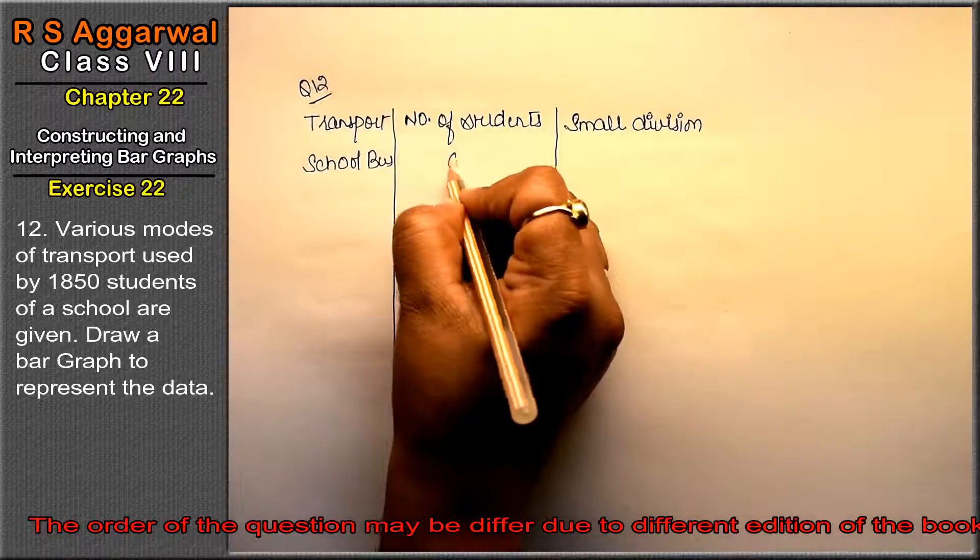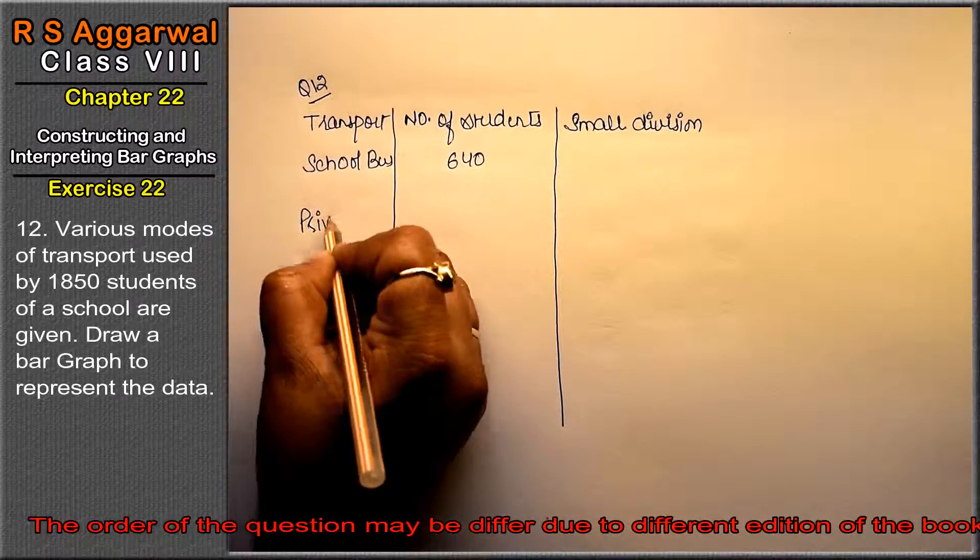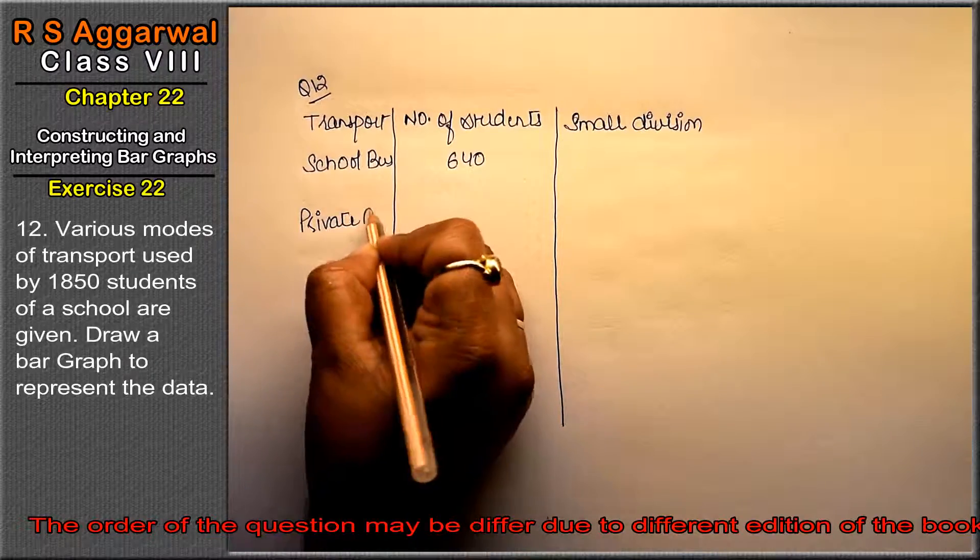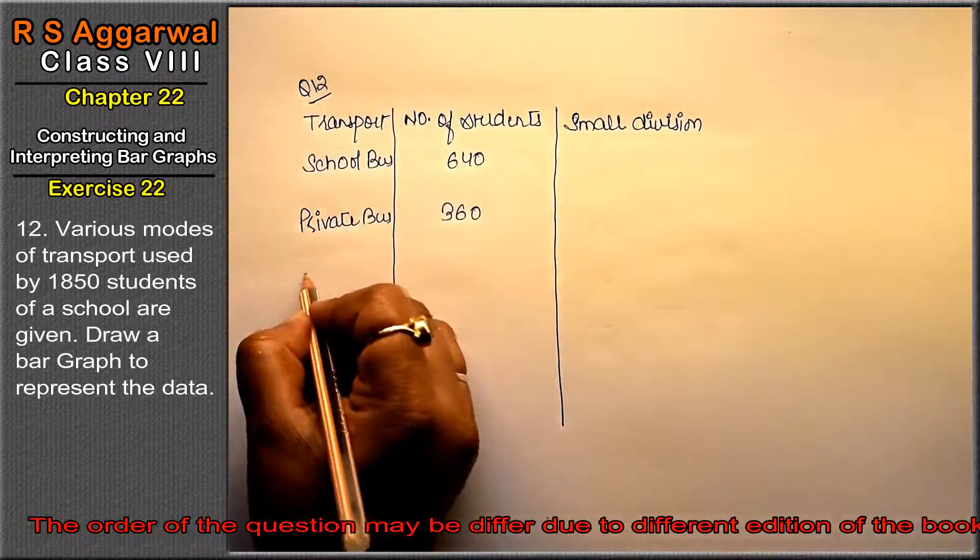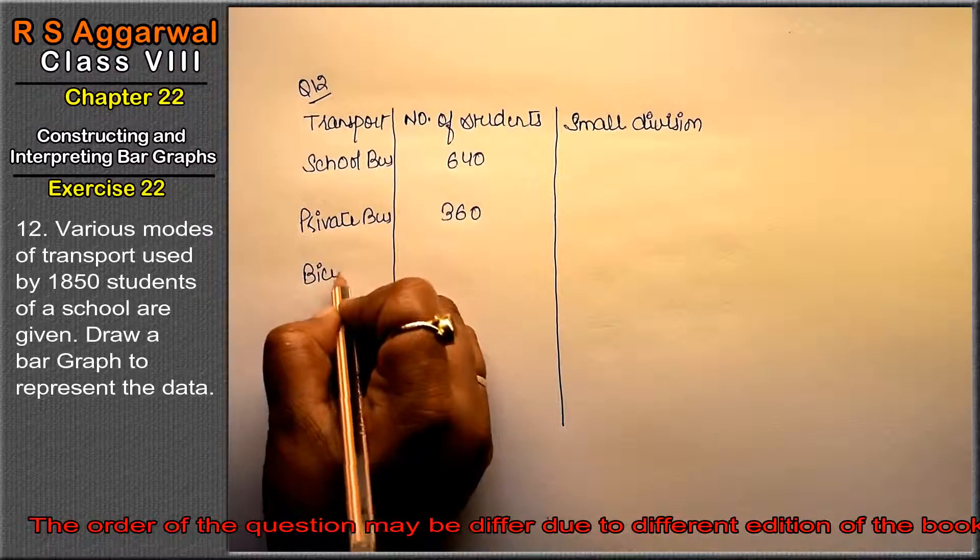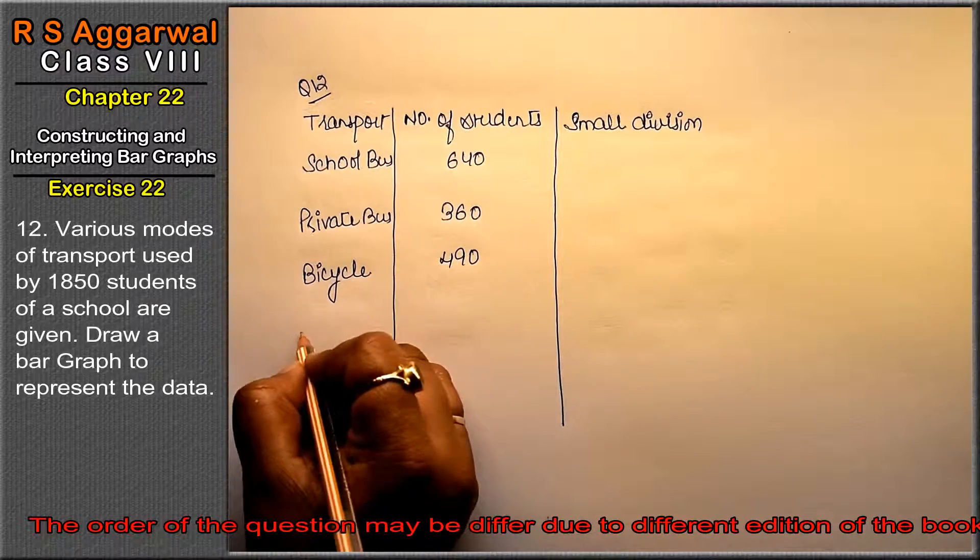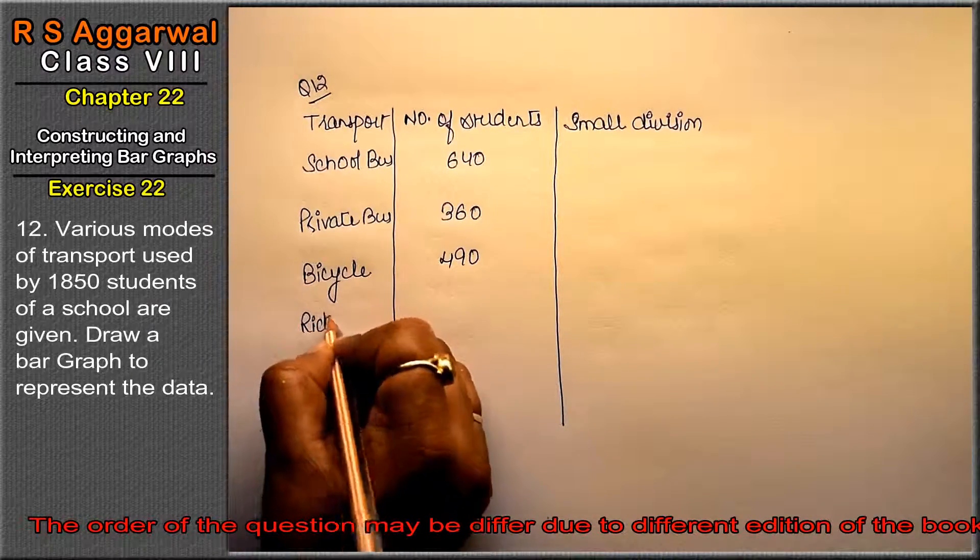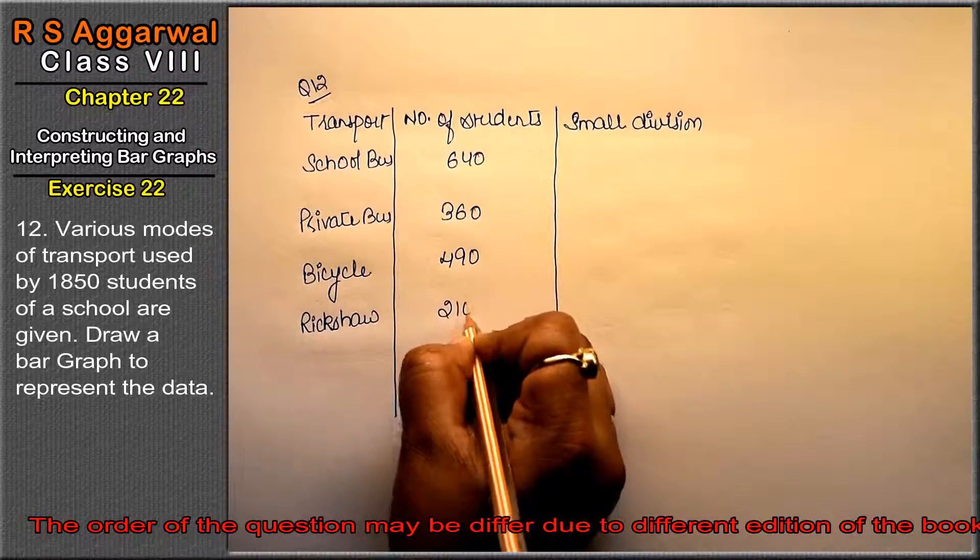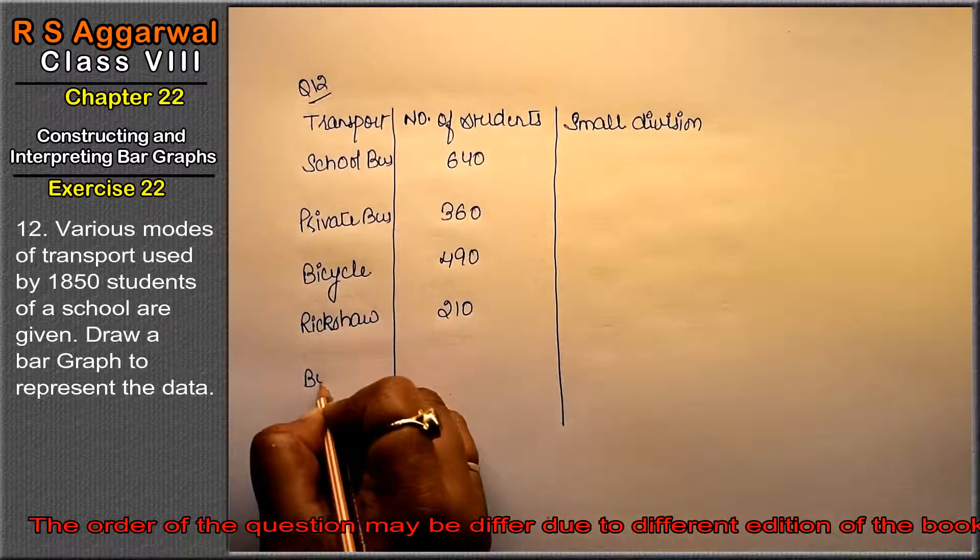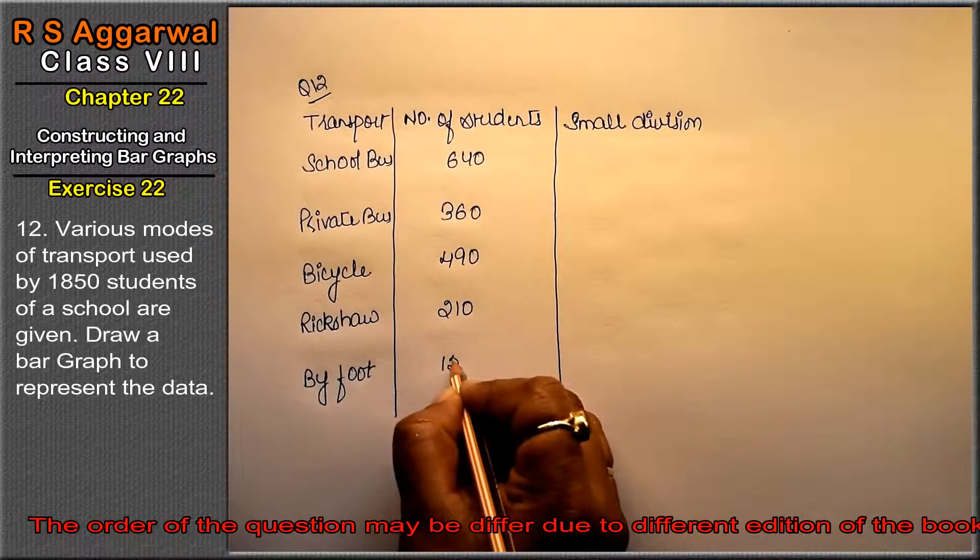School bus 640, Private bus 360, Bicycle 490, Now rickshaw 210, And by foot 150. Right?